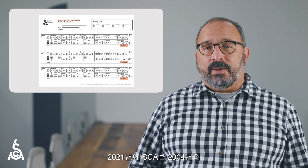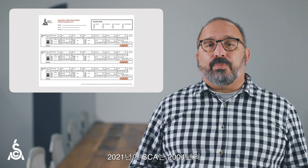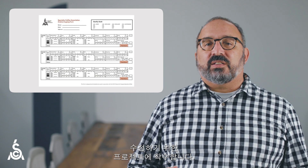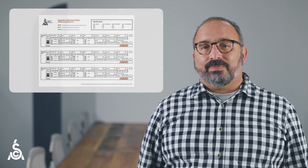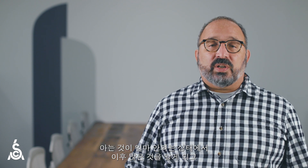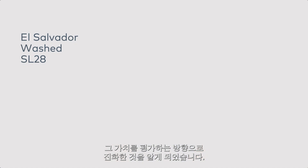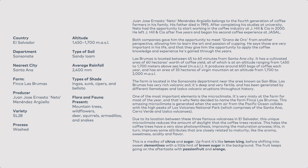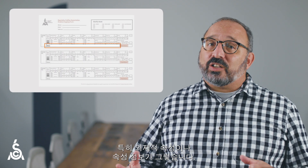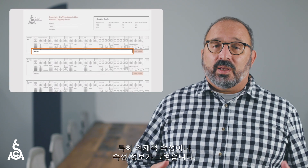In 2021, the SCA embarked on a project to evaluate and revise the 2004 cupping system. So we began our research. And in our research, we learned that the specialty coffee industry had gone from knowing just a few things about a coffee to knowing and valuing many things about a coffee. We also learned that in the 2004 form, there just isn't enough space to capture the wider range of attributes, especially extrinsic or informational attributes that we value now.